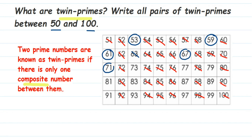71 and 73 are both prime numbers. 77 goes in the 11-times table so it is composite. 83 is a prime number — let me circle that. 87 is composite, so let me cancel that. 89 is a prime number. 91 and 93 are both composite numbers. 97 is a prime number, but 99 is composite.